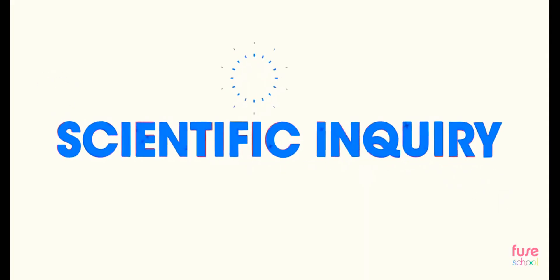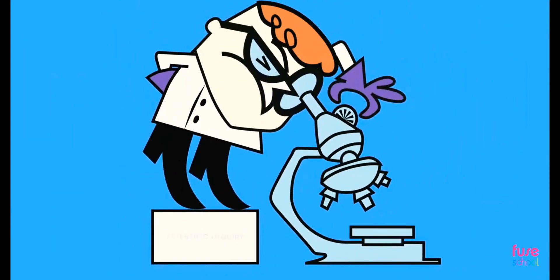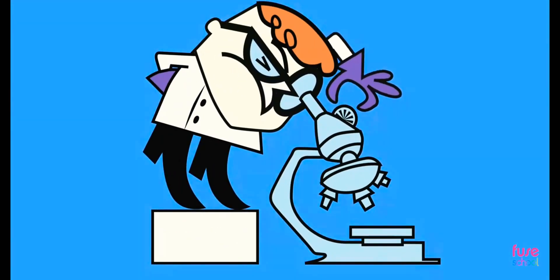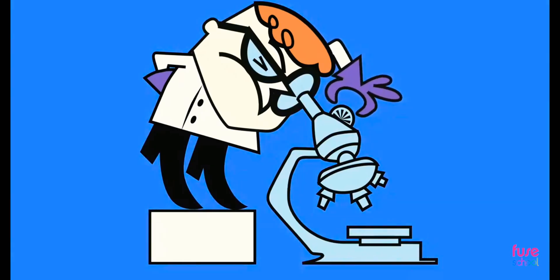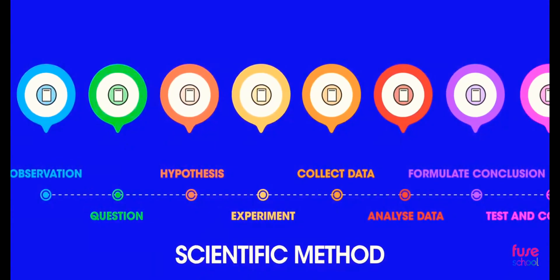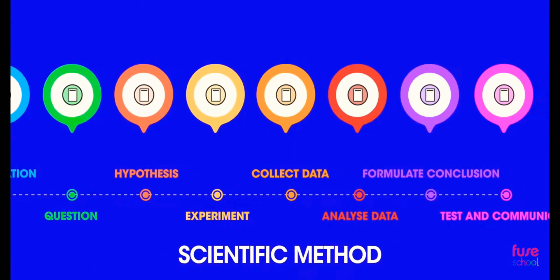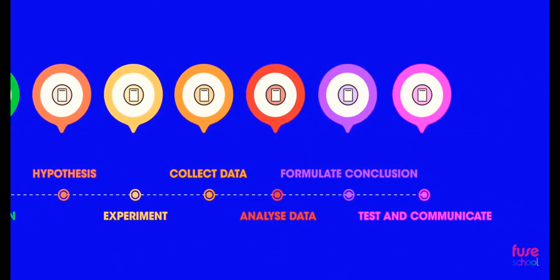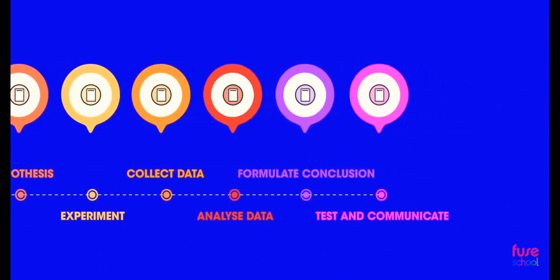How is scientific inquiry carried out in practice? Before a hypothesis is accepted by the scientific community, it goes through a series of steps. This is what we call the scientific method. This method was first devised by Sir Francis Bacon, an English scientist and philosopher.